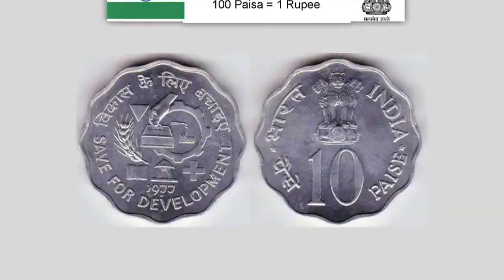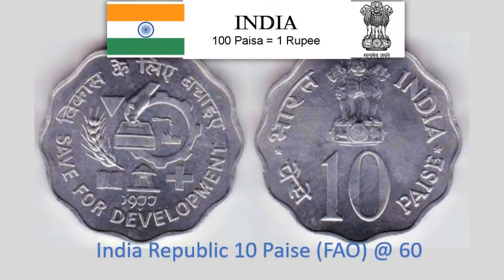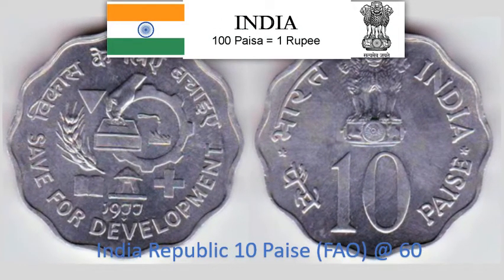India Republic 10 Paise 1977 — Circulating Commemorative Coin, FAO Planned Families, Food for All. 2.3 gram Aluminium scalloped coin with 12 notches, 26 mm diameter. Krause Reference No. 31. Approximate market value Rs. 60.